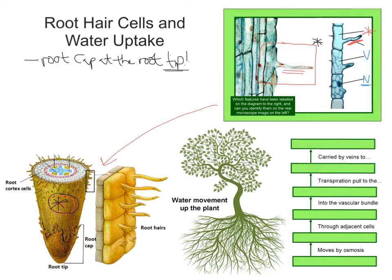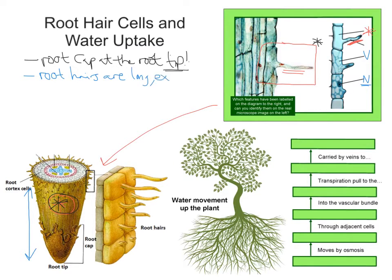Root hairs are found a little way up from the root tip, and they are continually replaced as the root grows. Notice that these root hair cells are found slightly higher up from the root tip — not immediately right at the base of the root, but a little bit higher. So to summarise: root hairs are long, extended epidermal cells.